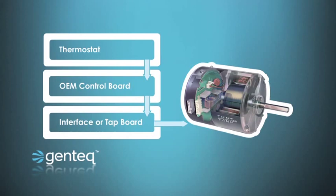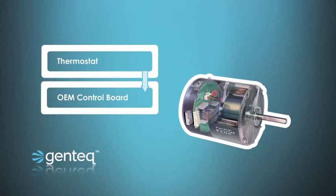At first glance, variable speed looks very complicated, but as you can see it's actually very easy — and as easy as it is, it makes the system do things that no other motor can do. Now let's look at where those controls are located in the HVAC system. Some manufacturers still use a separate board for the communication that goes to the motor: a thermostat sends the demand call to an OEM circuit board, which sends it down to an interface or tap board where you select your airflow settings, and that board sends the proper communication to the motor.